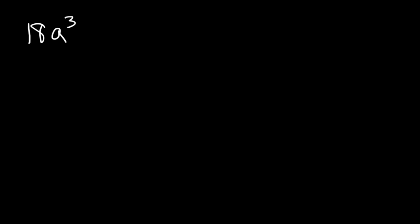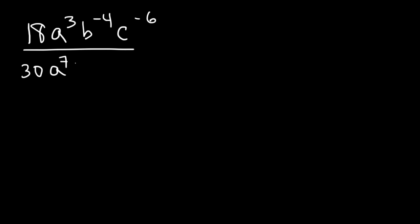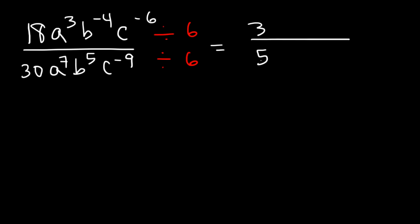So let's try this one: 18a to the 3rd, b to the negative 4th, c to the negative 6, divided by 30, a to the 7th, b to the 5th, c to the negative 9. Go ahead and reduce it. 18 and 30 are divisible by 6: 18 divided by 6 is 3, and 30 divided by 6 is 5. Now let's divide the a terms: a to the 3rd divided by a to the 7th — 3 minus 7 is negative 4, so it's a to the negative 4 on top.